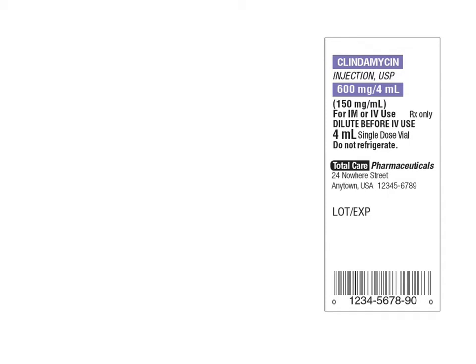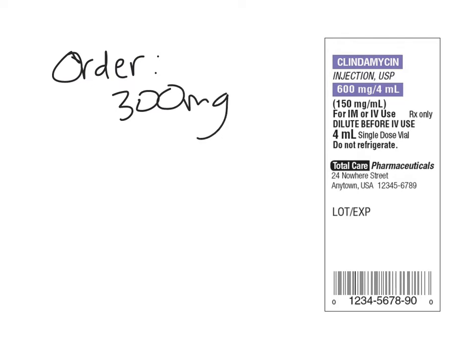Using the label that we have there on the right, let's say that we receive an ordered dose — I'm just going to write 'order' — let's say we have an ordered dose of 300 milligrams of clindamycin, the medication that we're looking at. And we just need to know how many milliliters do we give this particular patient.